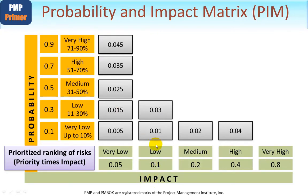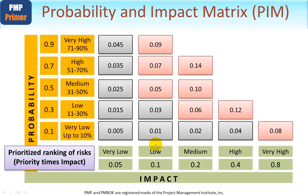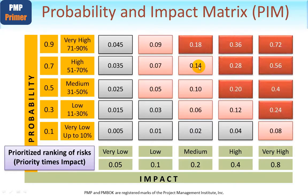Performing the same multiplication for the next grouping of cells: for example, 0.7 times 0.2 gives 0.14. Moving to the red grouping, the same approach applies — 0.9 times 0.2 gives 0.18.